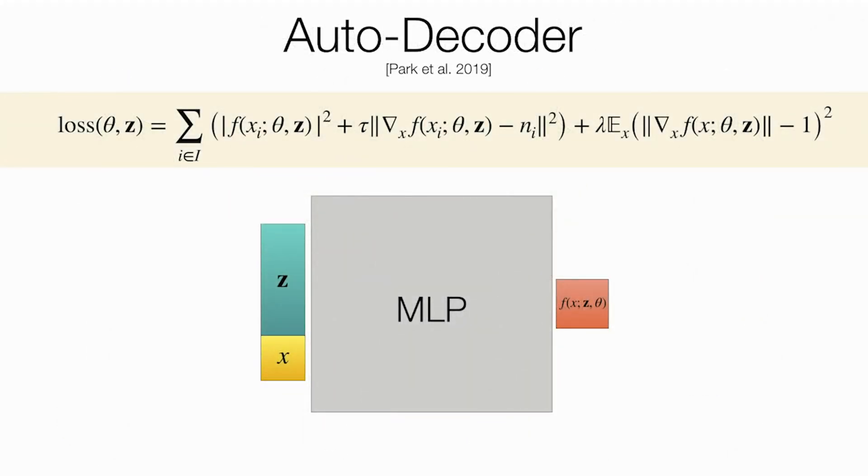So far, we only showed how to represent a single shape, but another interesting task is learning a space of multiple shapes. We do it using auto-decoder architecture suggested in DeepSDF. Namely, a latent vector is attached to every shape in the dataset, and then during training, both network weights and latent codes are optimized to minimize the IGR loss. Upon inference, the network weights are fixed, and the latent codes are optimized to fit an input test scan.